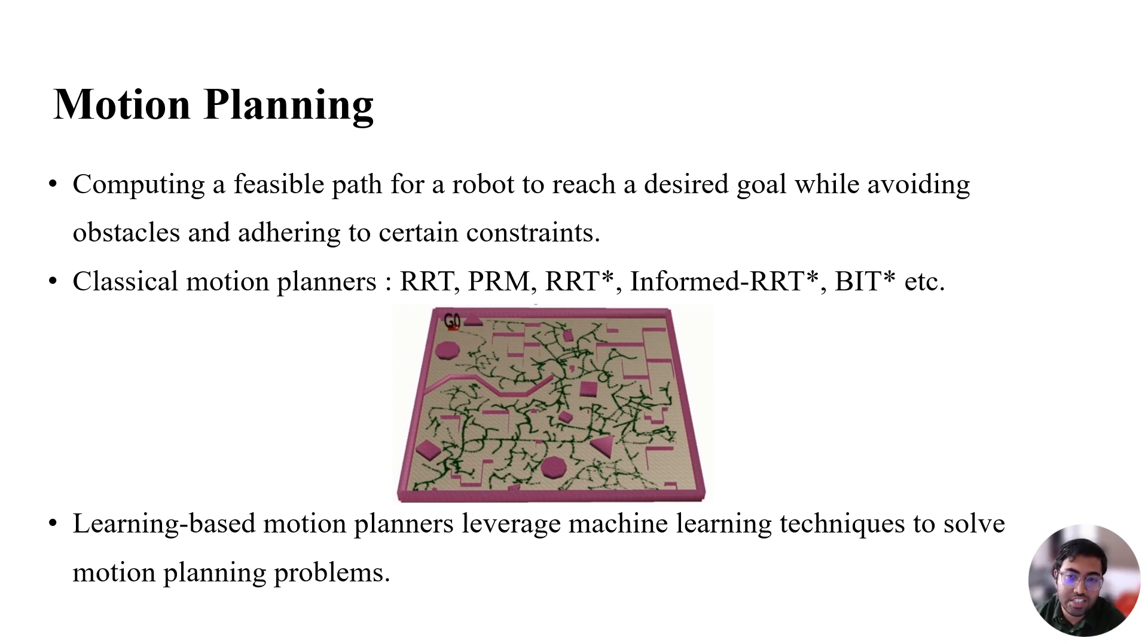There are several classical motion planning techniques that have been developed over the years as well as more recent learning-based motion planning approaches that integrate machine learning algorithms. Some of the most well-known classical motion planners are RRT, PRM, RRT star, Informed RRT star, BIT star, etc.